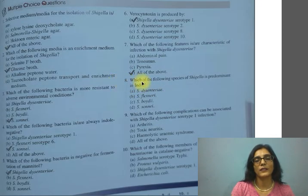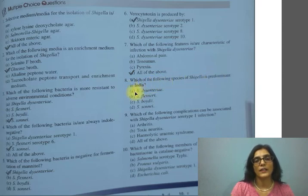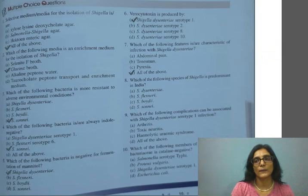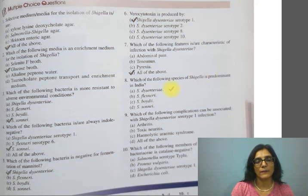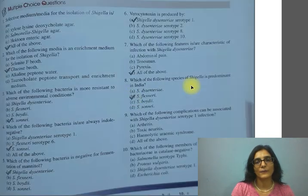Question 8: which of the following species of Shigella is predominant in India? A) Shigella dysenteriae, B) Shigella flexneri, C) Shigella boydii, D) Shigella sonnei. The correct answer is B, Shigella flexneri.